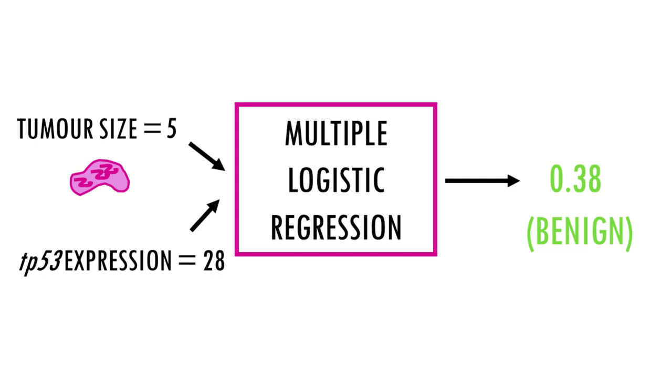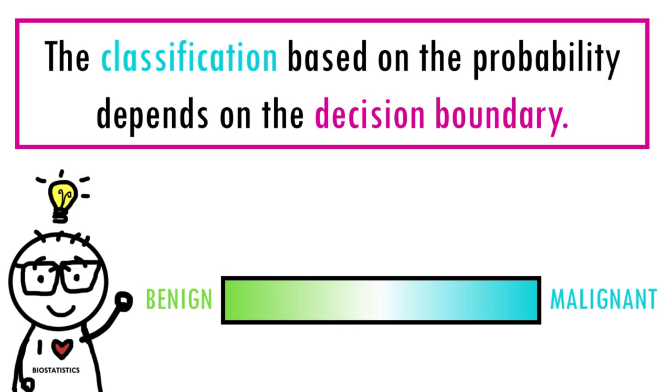This is another important feature of logistic regression. Our model just gives us the probability, but we are the ones who decide the threshold we're going to use to classify a tumor as malignant or benign. This is the decision boundary, the point we use to separate the two classes. In this case, it's benign and malignant. Usually, the default is 0.5, so if the probability of a given tumor is higher than 0.5, we classify it as malignant, and if it's lower, it's benign. But in many cases, we want a different decision boundary, higher or lower than 0.5.